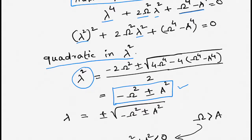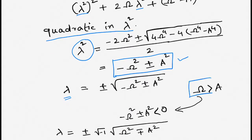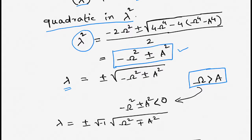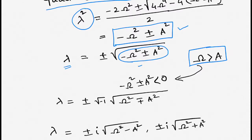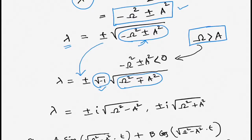This gives the value for λ², so one has to find the values for λ. λ = ± √(−ω² ± a²). The condition given is ω > a. We can check that if ω > a, then −ω² + a² < 0 and −ω² − a² < 0, so both expressions inside the square root are negative. Therefore, we take the factor of −1 out from under the square root, giving λ = ± i√(ω² ∓ a²).